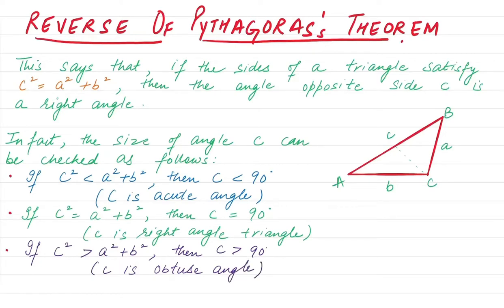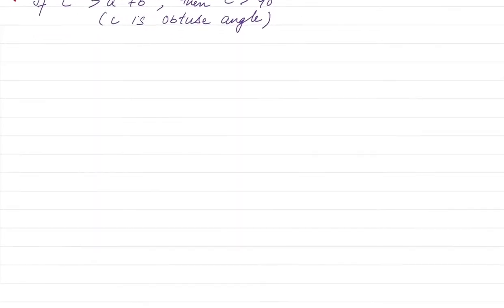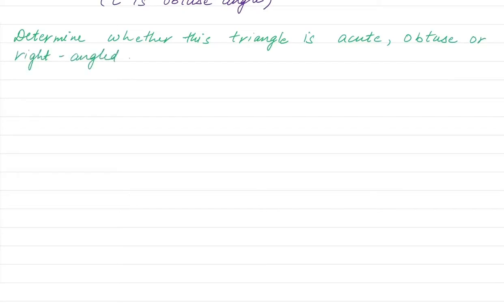We can understand this better if we do an example. Let's draw our triangle. Now we need to determine whether this triangle is acute, obtuse or right angle. Suppose this is a question given to us, and we have all the sides of the triangle.